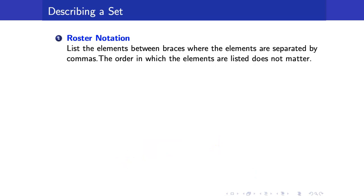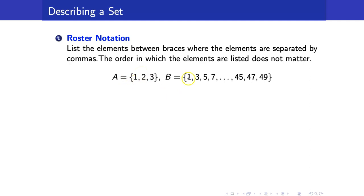There are two ways of describing a set. First, we have the roster notation, wherein we just list the elements between braces and the elements are separated by commas. Take note that the order in which the elements are listed does not matter. For example, we have the set {1, 2, 3}. Here we have a set of all odd numbers from 1 up to 49 — if we have a lot of elements, we use the ellipsis to denote that it will continue.